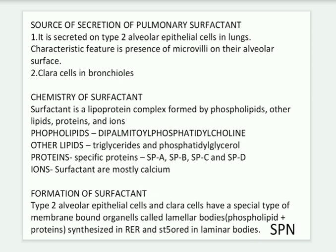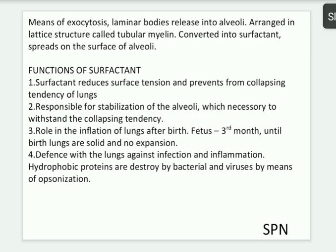In the formation of surfactant, type 2 alveolar epithelial cells and Clara cells contain membrane-bound organelles called lamellar bodies, made up of phospholipids and proteins. These are synthesized in the rough endoplasmic reticulum and stored in lamellar bodies. By exocytosis, the lamellar bodies come out into the alveoli, arrange into a lattice structure called tubular myelin, and convert into surfactant that spreads on the surface of the alveoli.